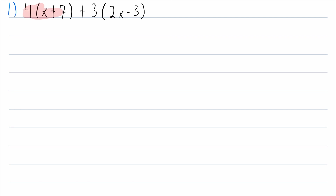Here we've got four times x plus seven, plus three times two x minus three. We're going to want to expand this and then add like terms to simplify it. Since we have four multiplied by x plus seven in parentheses, we'll use the distributive property. First, we multiply four times x, which is 4x, and then we add four times seven, which is 28.